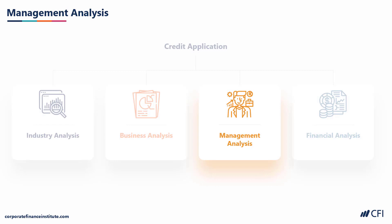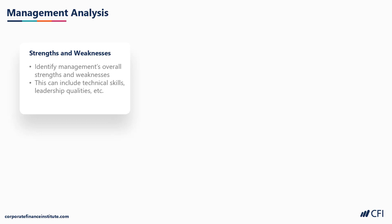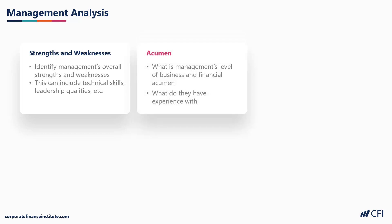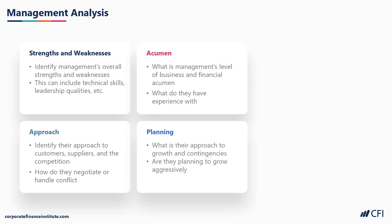In this section we're going to look at how you can analyze the management team of a business. This is a very important part of the overall credit application process. Let's look at some examples of what we will identify in the management team. We'll look for their strengths and weaknesses — things like technical skills they possess or leadership qualities, or the lack of these. Then we'll look at their business acumen: how professional and experienced are they, what is their education like, and how qualified are they to run the business? We'll look at their attitude towards managing the business — how they work with suppliers and customers and how good they are at handling conflict. Finally, we can look at their planning skills: what is their growth plan, how well thought out is it, and how well have they executed against prior growth plans?